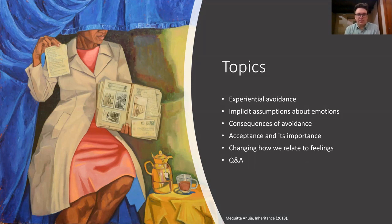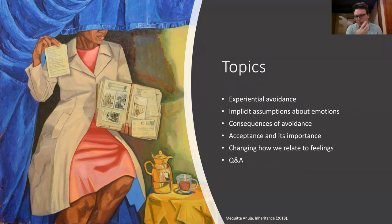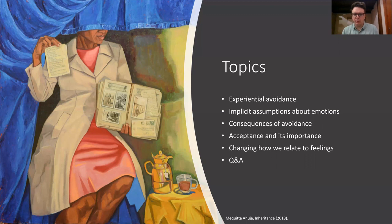Take this section as an invitation to think about how this concerns you specifically, because I don't think there's a generic answer. I will show you through various examples rather than offer a comprehensive theory. We'll talk about consequences of avoidance, then about acceptance as the polar opposite of avoidance, and why acceptance is important. Then I'll give you some general pointers about how to change the way you relate to your feelings.